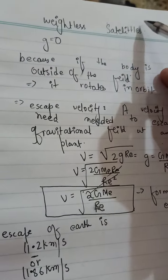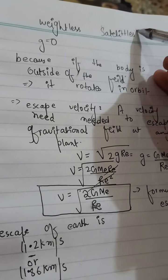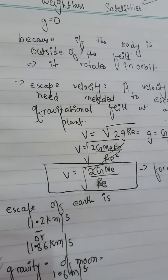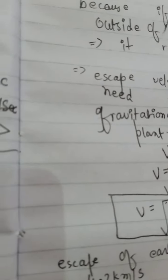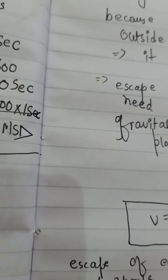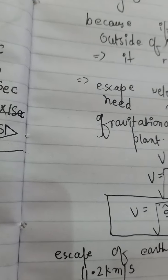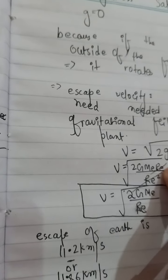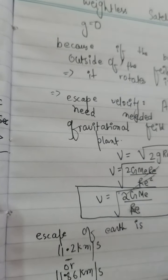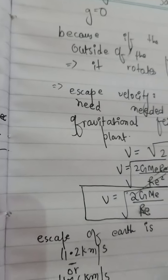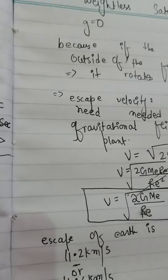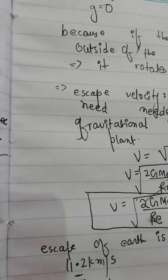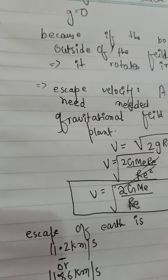Satellites have zero gravity because a body moving outside of the Earth cannot be affected by pressure, air resistance, or the spinning of the Earth. So these are the three effects outside of the Earth. Thank you.